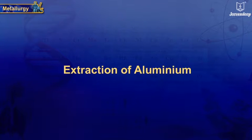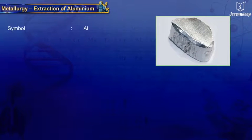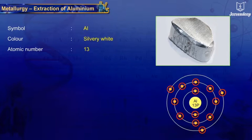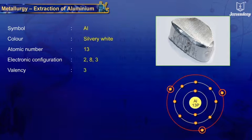Extraction of Aluminium. The symbol of aluminium is Al. It is a silvery white metal with an atomic number of 13. Its electronic configuration is 2, 8, 3 and its valency is 3.